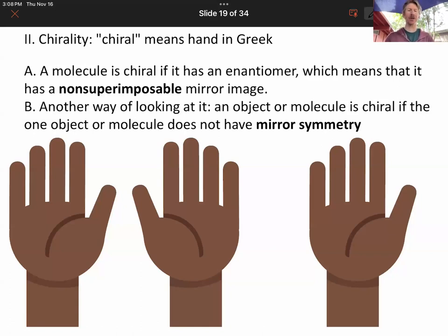A molecule is chiral if it has an enantiomer, which means it has a non-superimposable mirror image, things we've talked about before.